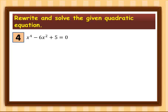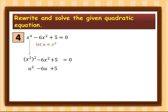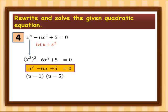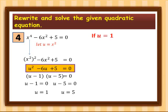Again, we let u equal to x squared. So x to the 4th can be written as (x squared) squared, giving us u squared minus 6u plus 5 is equal to 0. This is now the quadratic equation. Factoring: (u − 1)(u − 5) = 0, so u − 1 = 0 and u − 5 = 0, giving u = 1 and u = 5.